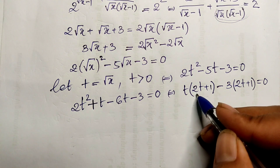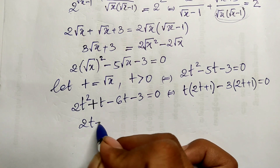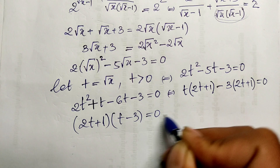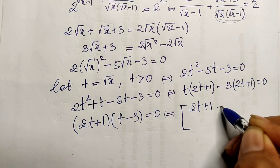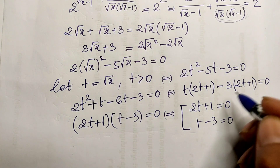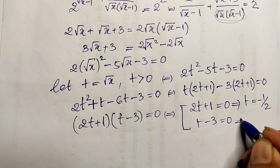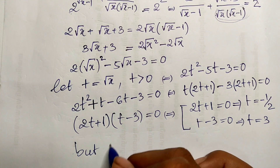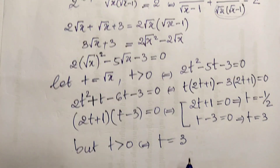Since (2t plus 1) appears in both terms, we factor it out to get: (2t plus 1) times (t minus 3) equals zero. So either 2t plus 1 equals zero, giving t equals negative 1/2, or t minus 3 equals zero, giving t equals 3. Since t is positive, we take t equals 3.